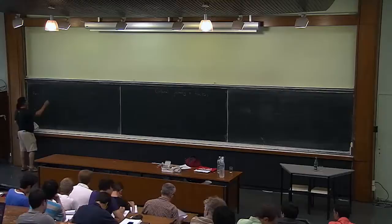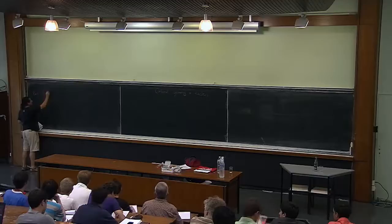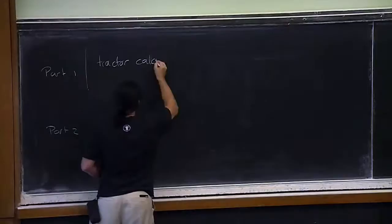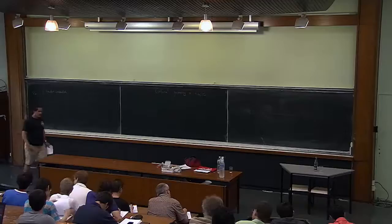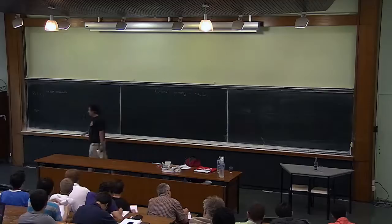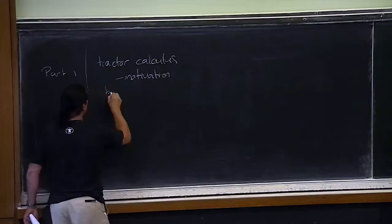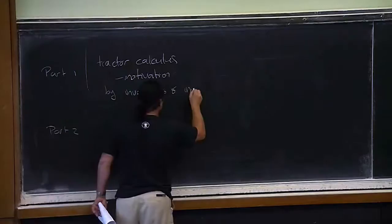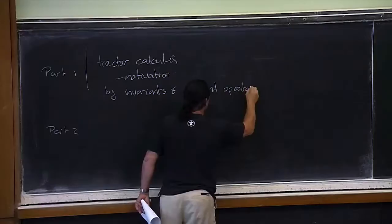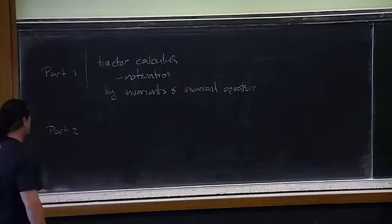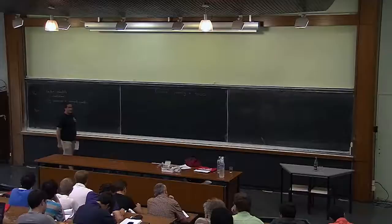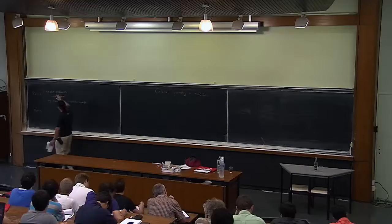One of the main things we want to do in part one is develop a calculus called tractor calculus, which is just an invariant calculus for conformal geometry, just as the Levi-Civita connection gives an invariant calculus for Riemannian geometry. The motivation I want to give in this part is invariants and invariant operators. If you want to do analysis on some sort of geometry, these are the basic tools you would need to even start doing analysis.